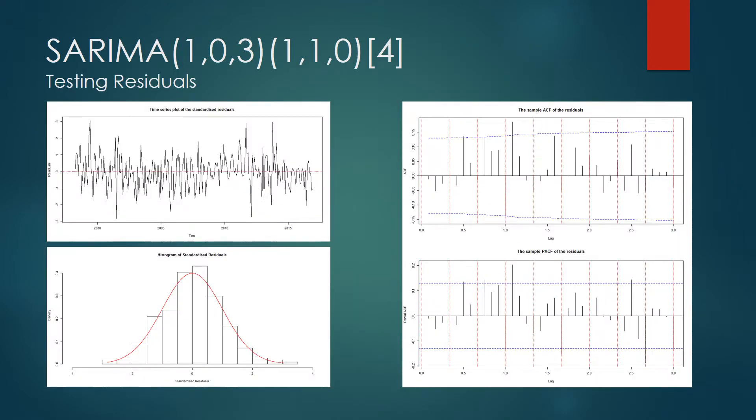The Shapiro-Wilk normality test of this first model has a p-value of 0.3715, showing that the residuals may be considered normally distributed. The Ljung-Box test has a p-value of 0.4915, allowing us to assume that there were no further correlations requiring explanation in the model. The distribution appears normal according to the histogram, and the ACF and PACF plots show relatively few remaining significant lags.